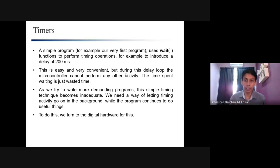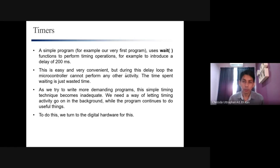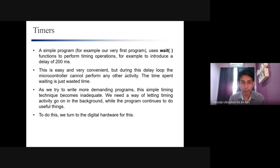Before this, we actually implement timing a lot in our programs and applications, especially in your mini assignment. For example, when you read the analog input, after you read it, you need to wait for the analog value to be converted to the digital value. Most of the time you need to use the wait function — whether wait one millisecond or wait 100 milliseconds. That wait function actually implements the timer. We call it the software timer.